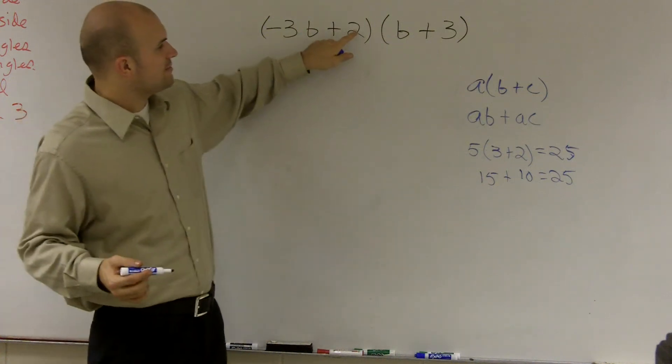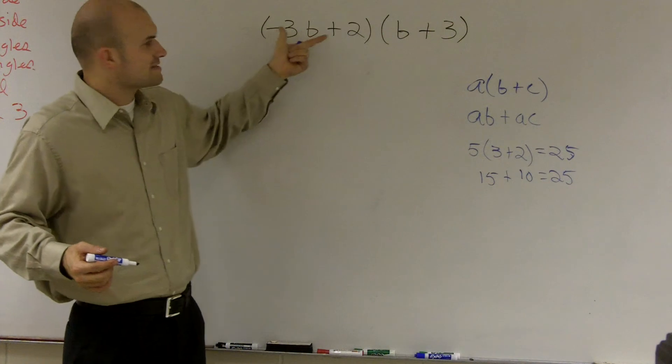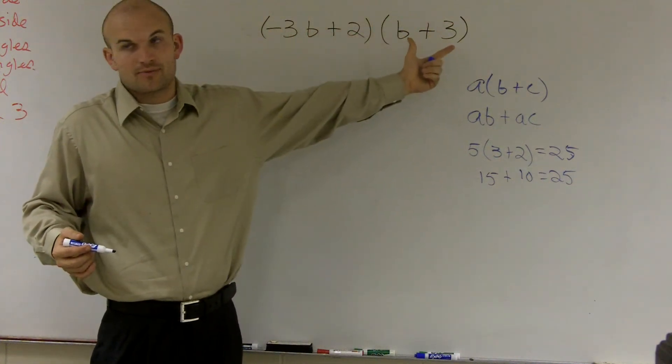Now, however, when you have, so we would multiply the 2 times the b and the 2 times the 3, right? However, I have this as a whole binomial. This whole binomial is multiplied by this binomial.